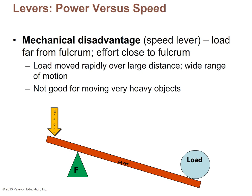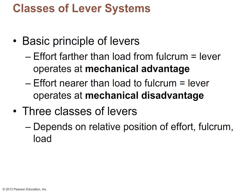In summary, when the effort is further from the fulcrum than the load, the lever operates at a mechanical advantage and is a power lever. When effort is closer to the fulcrum than the load, the lever operates at a mechanical disadvantage — called a speed lever — because it has a very large range of motion and can move very quickly, but cannot move very heavy things efficiently.